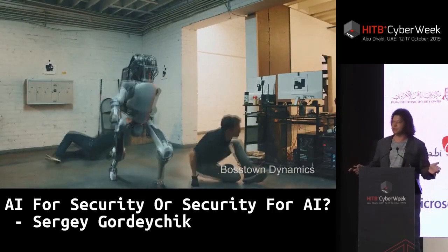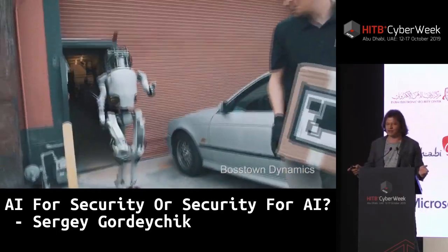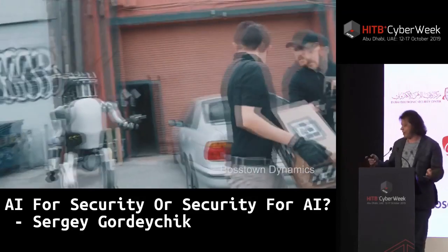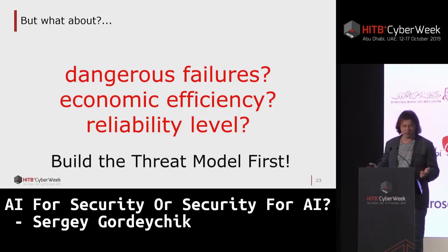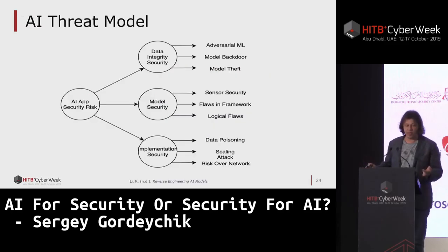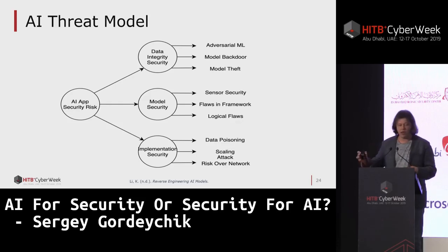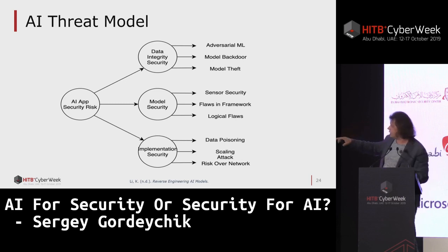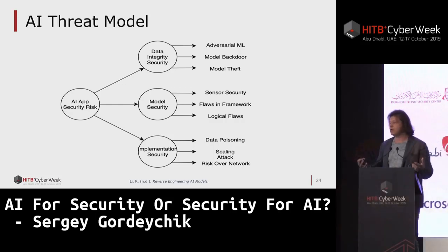How do we approach such problems? We should build a threat model first. What we have from AI threat models is a very good definition from Professor Lee. He has three pillars of AI security in the threat model: first is data integrity, next is model security, and next is implementation security. This approach is very good for research purposes, but when you try to build a security system you need more details, because it doesn't take into account a lot of things that are also important for real systems.